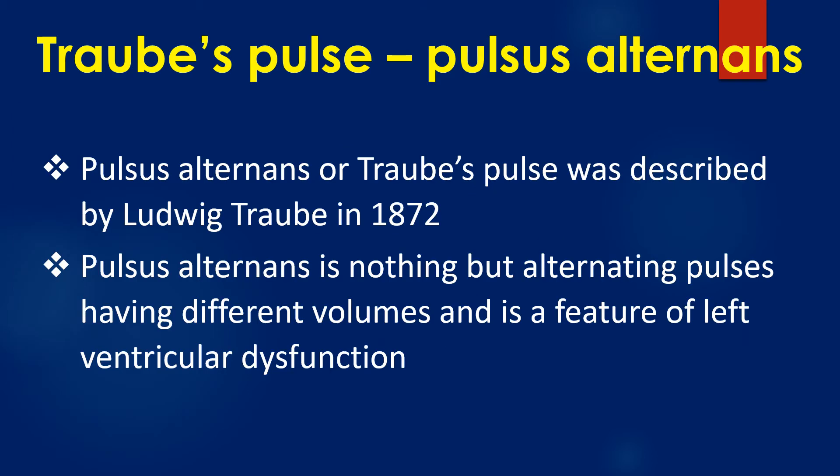Pulse alternance, or Traub's pulse, was described by Ludwig Traub in 1872. Pulse alternance is nothing but alternating pulses having different volumes and is a feature of left ventricular dysfunction. It is well known that pulse alternance can be augmented by a premature ventricular contraction.